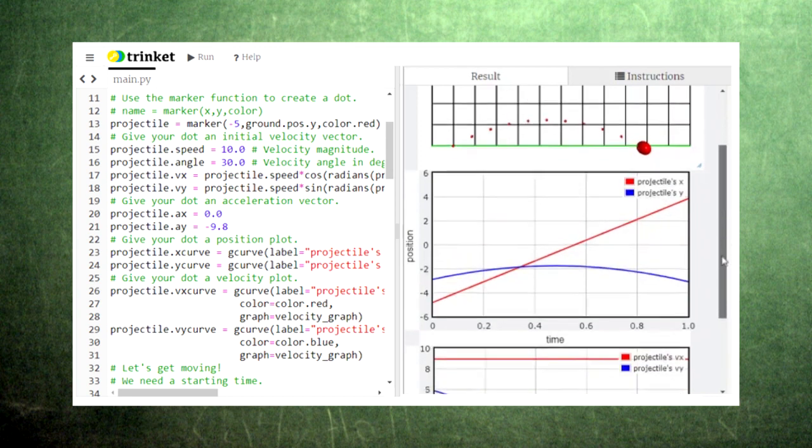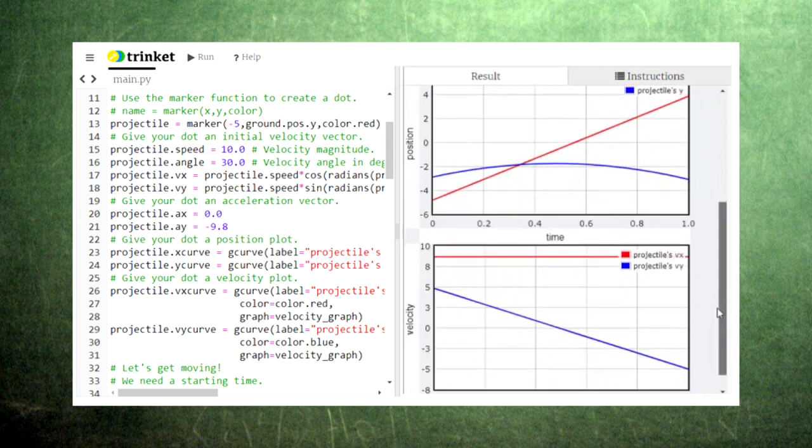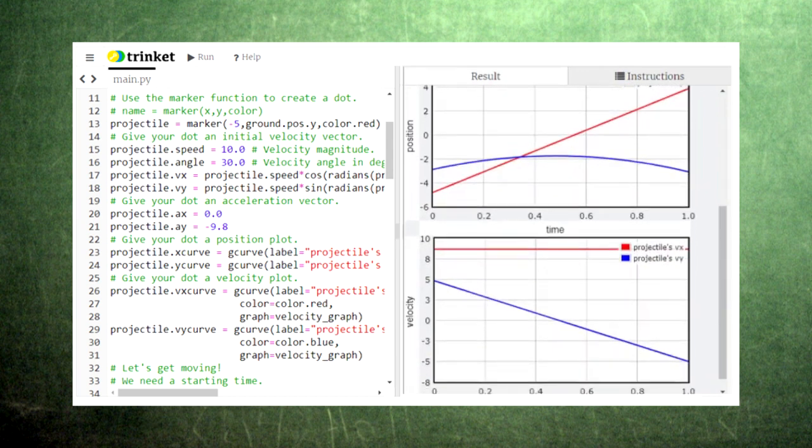The velocity graph also matches this behavior, with the x component of the velocity a constant and the y component steadily decreasing, changing from positive to negative. We can also estimate our three quantities of interest from these graphs.